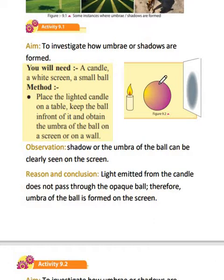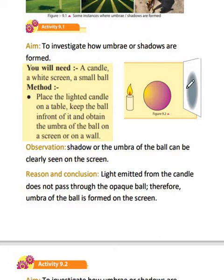You are going to light the candle and keep it on a table. Then you are going to fix the screen a little further away from the candle on the table. You are going to place the ball between the candle and the screen. Then you can observe that there is some dark spot, somewhat similar to the ball's size. That is an umbra, also known as a shadow — the shadow of the ball.